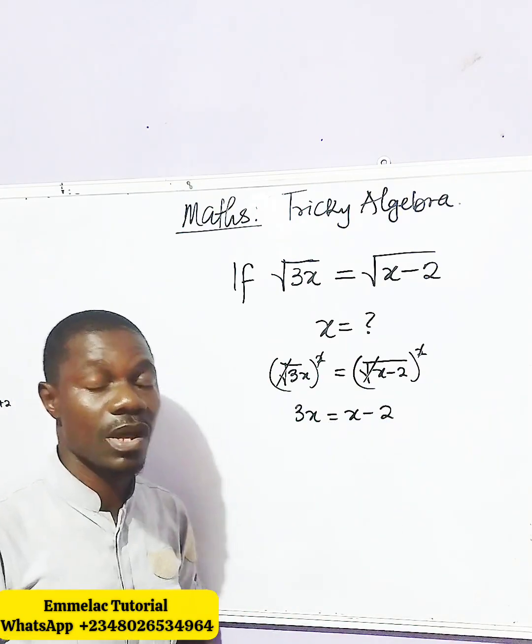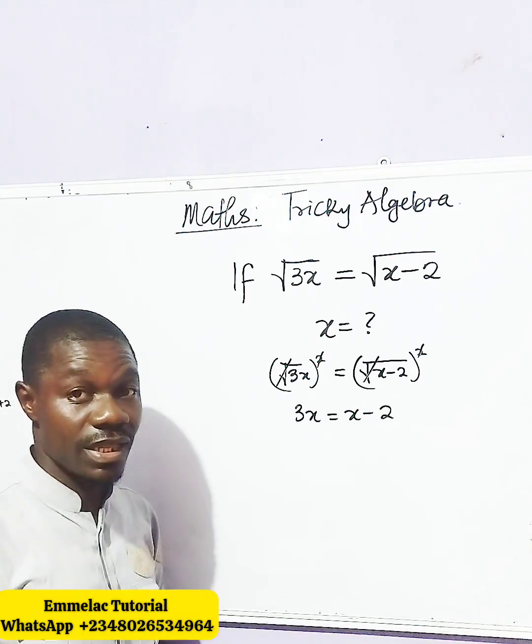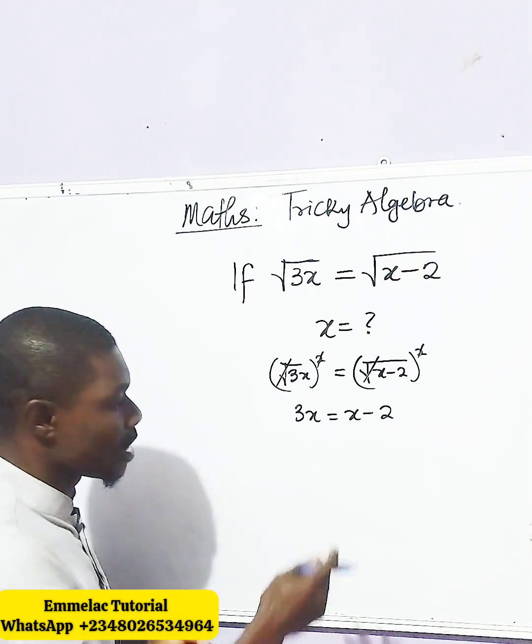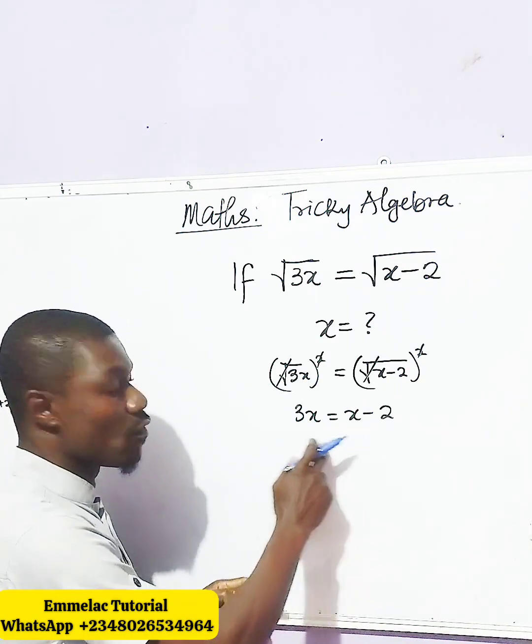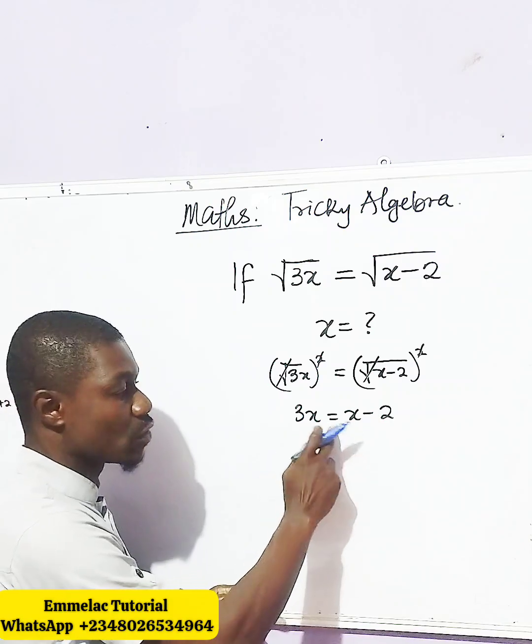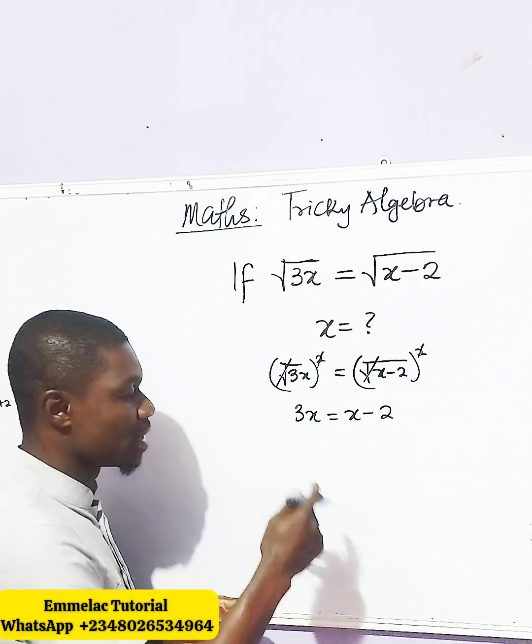So the next thing we need to look at is to collect like terms. Now the x here moves over to the left-hand side, and when it crosses over this equal sign, it becomes negative.